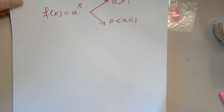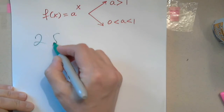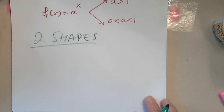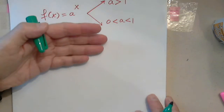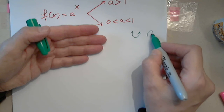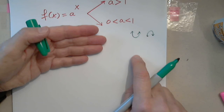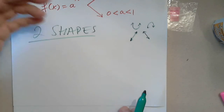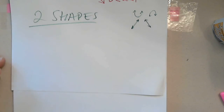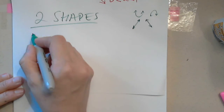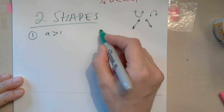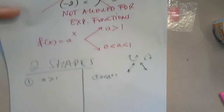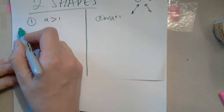So that means this function has two shapes. Do we know other functions with two shapes? Of course we do. So this one will have two shapes: the first when the base is greater than 1, and the second when the base is between 0 and 1. Let's take a look at both situations.